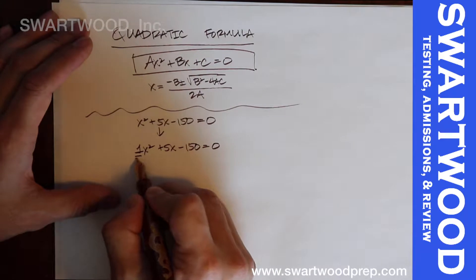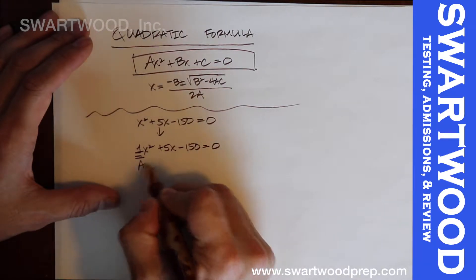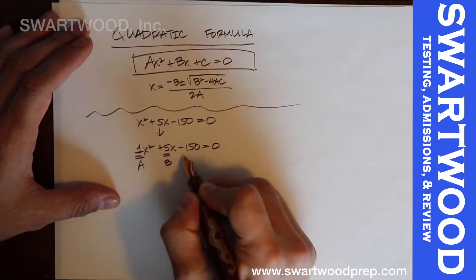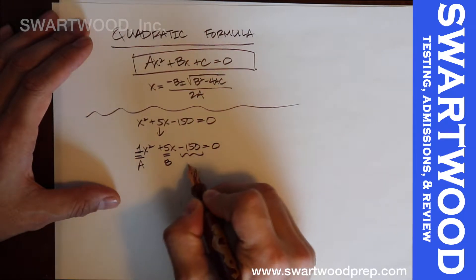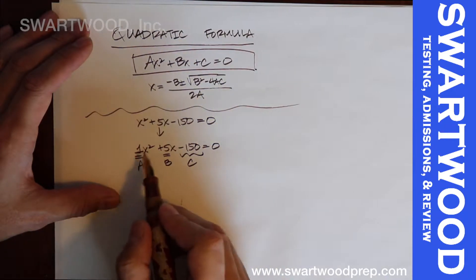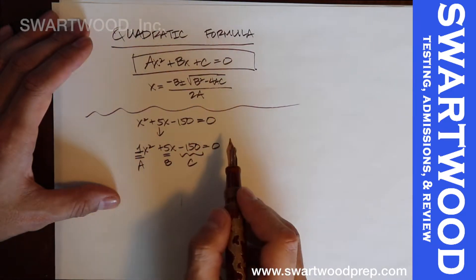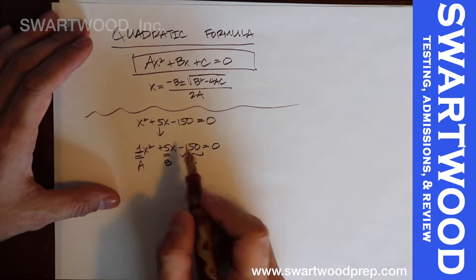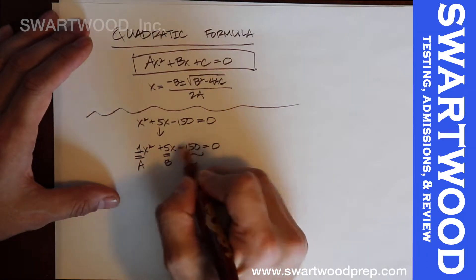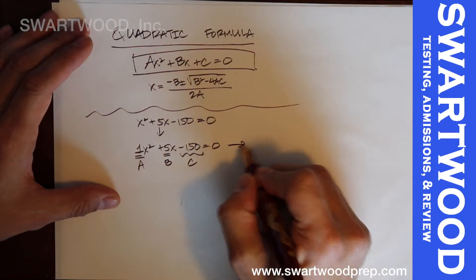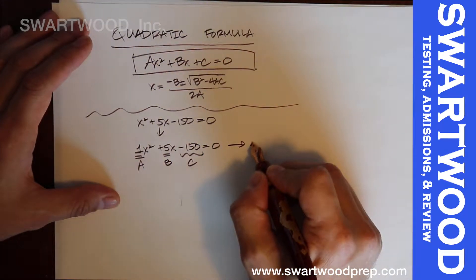Looking at the coefficients: a is 1, b is 5, and c is negative 150. You always want to think of connecting terms with pluses, so it's better to write it as plus negative 150 rather than being lazy about the sign.